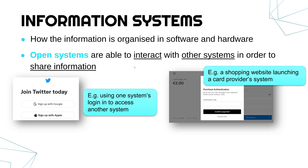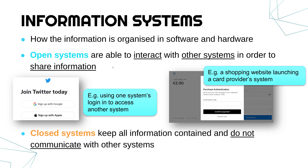According to this definition, if you are sharing information, anyone outside of the organisation being able to access it makes it an open system. A closed system, therefore, is where nobody outside of your organisation is able to access the system at all and cannot get any information from it. Closed systems keep all information contained and do not communicate with other systems or other people. For example, if your school had a secure system for safeguarding, or a company had a secure database only accessible inside the building — those would be examples of closed systems.